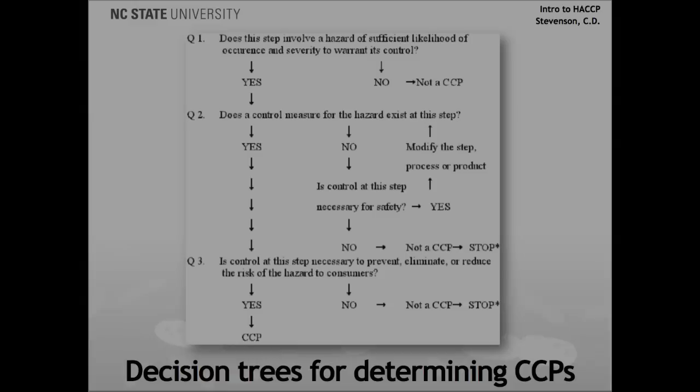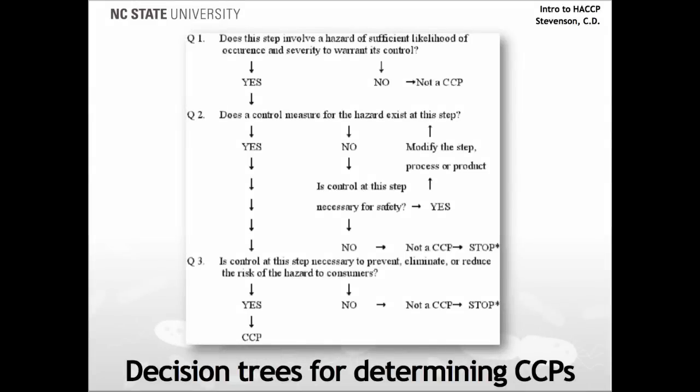So how do we go about determining whether a processing step qualifies as a critical control point? Sometimes this decision process is easy, other times it's confusing. Fortunately, there's a commonly used tool that's designed to help us with this process. This tool is called the decision tree. Let's take a look at a decision tree found in the FDA's guidelines for the principles and applications of HACCP, which you also have access to on their website. Using this decision tree is very simple.